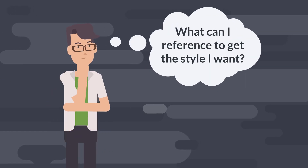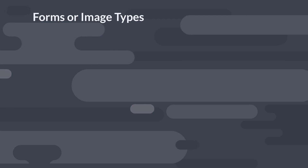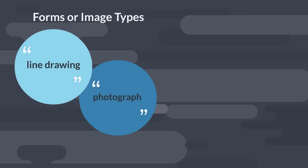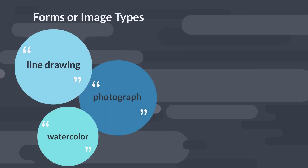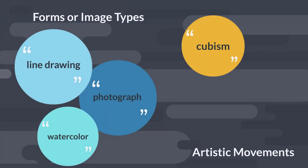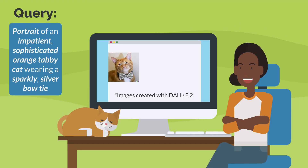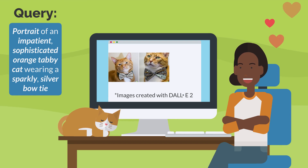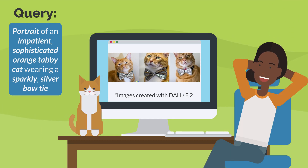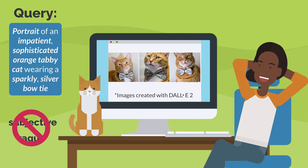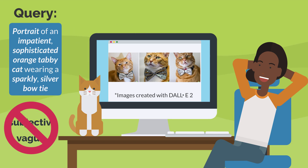For example, you may find that you want to reference particular forms or image types, like drawings or photographs, or particular artistic movements like cubism or afrofuturism. You will find that working with this level of detail will provide better outcomes than leaning on subjective and vague terms like "interesting" or "moody."